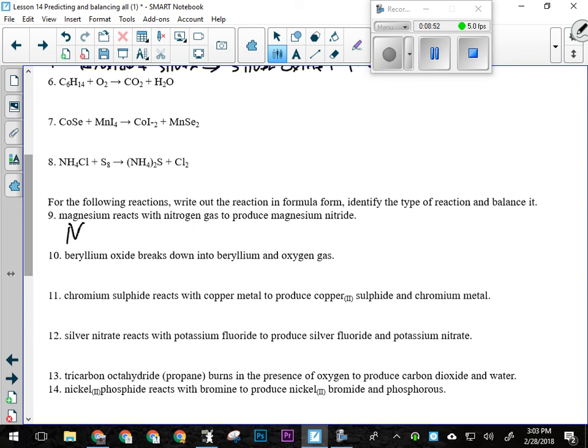So we have magnesium reacting with nitrogen gas, which is a special element, producing magnesium nitride. So Mg with N. That's an ionic compound. So I've got to drop and swap. So we'll have Mg3N2.